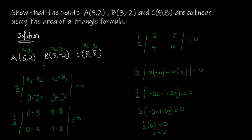Because the area of the triangle after calculating is equal to zero, we can conclude that the points A(5, 2), B(3, -2), and C(8, 8) are collinear points, since the area of the triangle is equal to zero. Thank you for watching. This is how we calculate whether two or more points are collinear using the area of a triangle formula. I will see you in the next video, where we will be talking about the equations of a straight line given one point. Thank you once again, bye-bye.